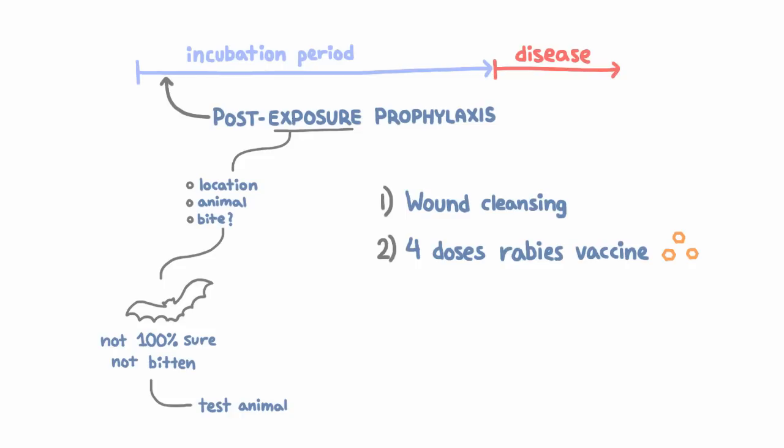And the idea here is to give a big boost to the person's immune system while the rabies virus is incubating. And third, you're gonna give rabies immune globulin administered around the wound and also intramuscularly.